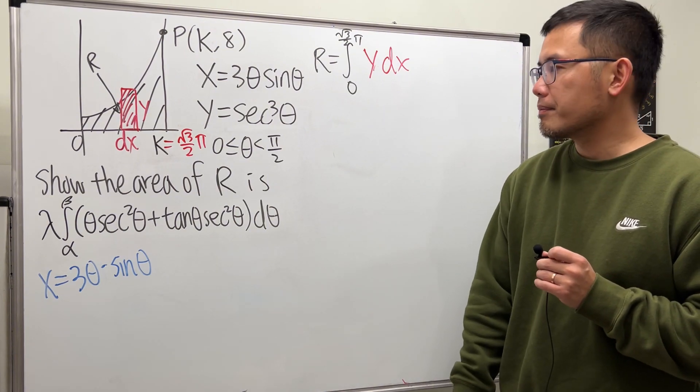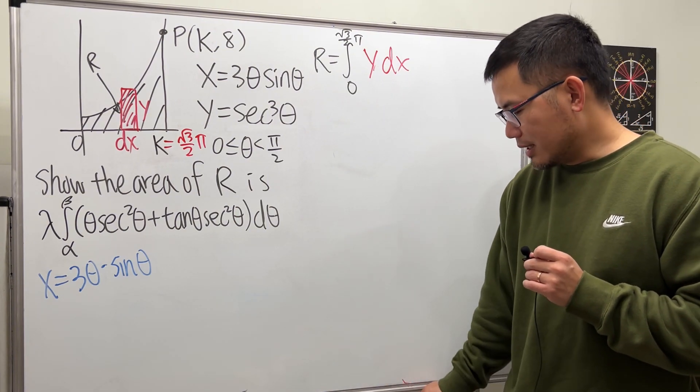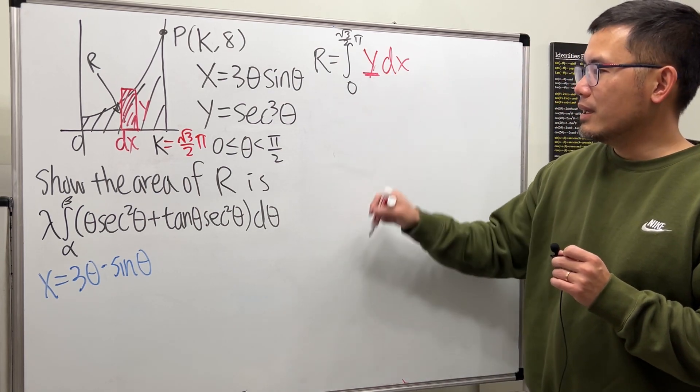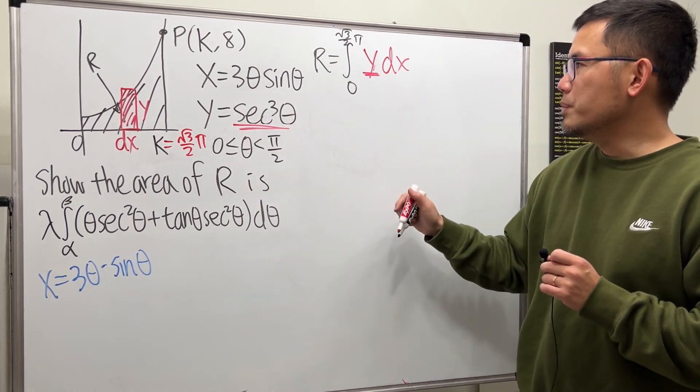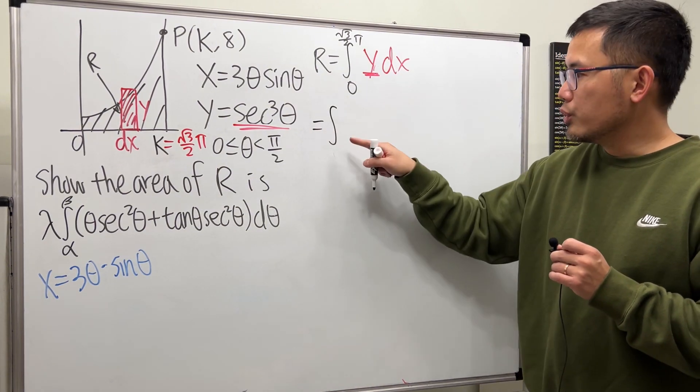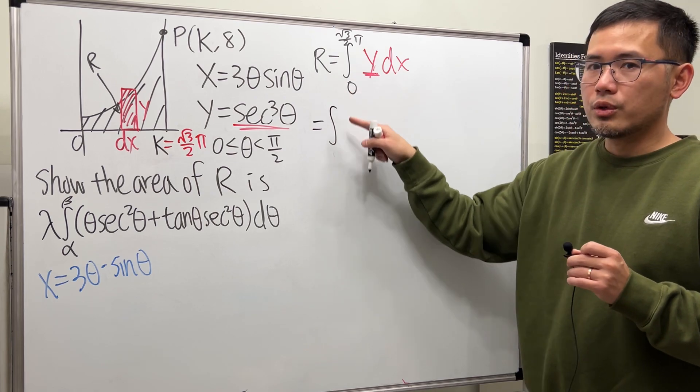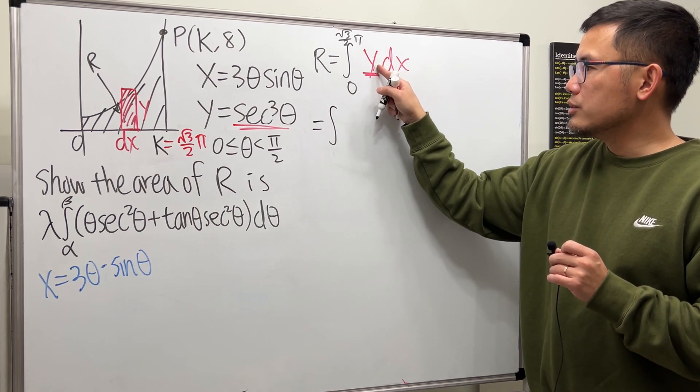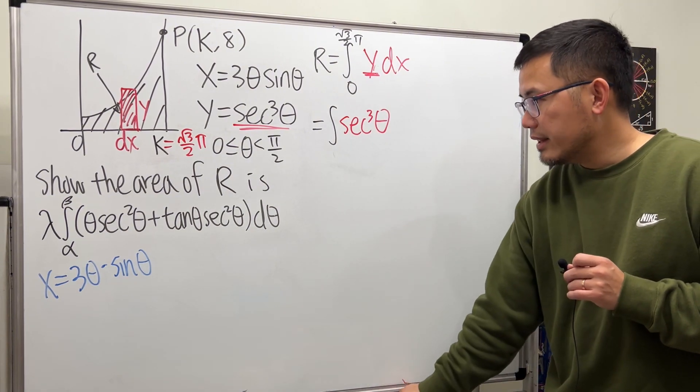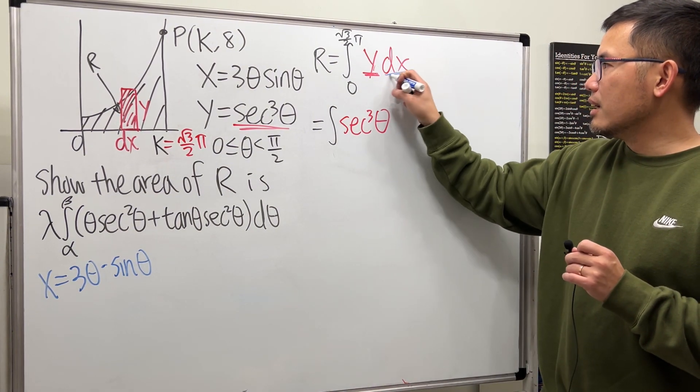That's why I showed you in the first video. First look at the y, which is secant cubed θ. This right here becomes integral - do not put down the numbers yet though because we don't know what they are. Let's write y as sec³θ.